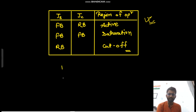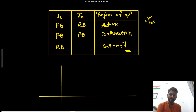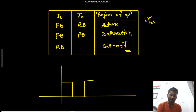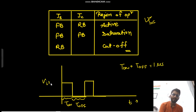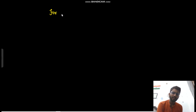Let us draw the input again. This is over T-on time and this is over T-off time, and T-on plus T-off equals to 1 microsecond. This is T, and this is Vin = 3.7 V. So for 0 to T1, your Vin is 3.7V.